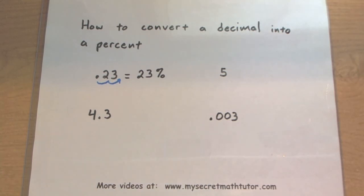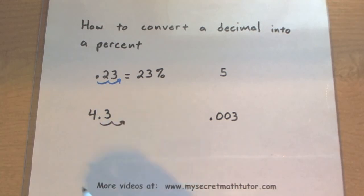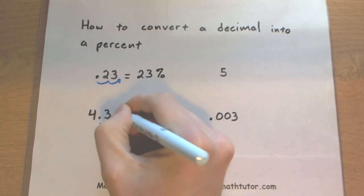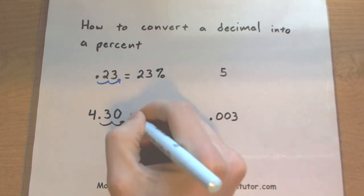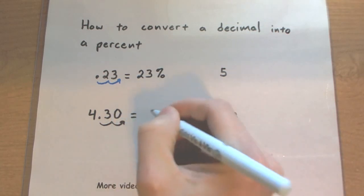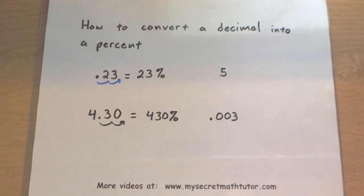Now let's give this a try for a few other examples. So 4.3, I want to move my decimal over two spots. You'll notice when I do this, I need a placeholder zero when I move it over that second spot. So 4.3 as a percent is 430%.